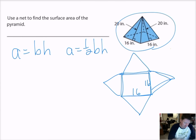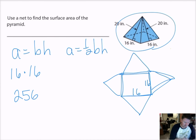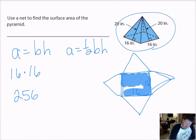Let's do the rectangle first because that's easy. Multiply 16 times 16, and that gives me 256. So the area of this rectangle is 256 square units.